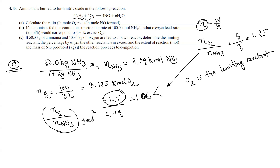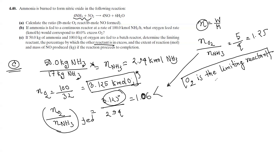So oxygen is the limiting reactant. Since the actual O2/NH3 ratio (1.06) is less than the stoichiometric ratio (1.25), oxygen is limiting. NH3 is therefore in excess. We now calculate the percentage excess of NH3.